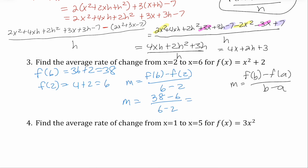38 minus six is 32, and six minus two is four. Four goes into 32 eight times, so our average rate of change is eight.